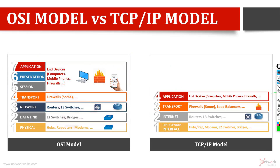Hi everyone, many of you have asked questions about differences between the OSI model and TCP/IP model in terms of devices which belong to each layer in these two models. Let me answer this question quickly. There are two models: the first is called the OSI model and the other is called the TCP/IP model, which is the practical model.